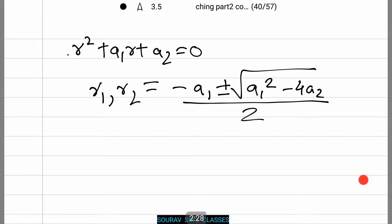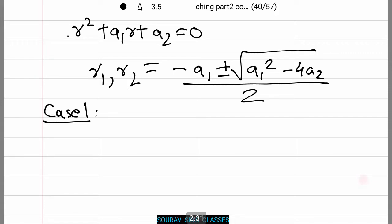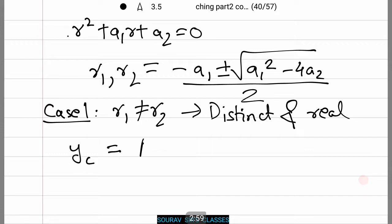Now we need to remember three cases and three equations. For Case 1, when r₁ is not equal to r₂ but they are distinct and real, the complementary function yc takes the form A₁e to the power r₁t plus A₂e to the power r₂t. Notice r₁ is not equal to r₂.